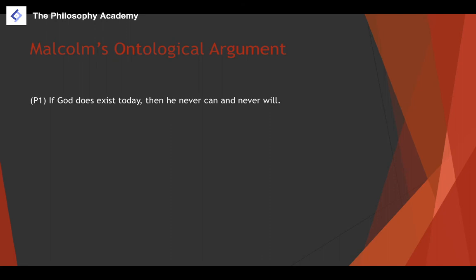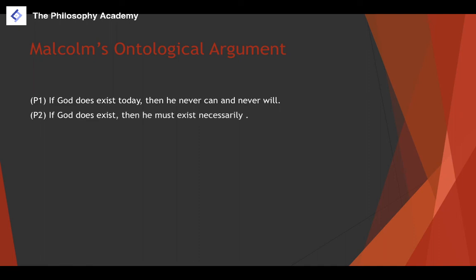Malcolm's argument: Premise one — if God does not exist today, then he never has and never will exist. A key characteristic of God's existence is that if he exists, he must exist forever. Premise two — if God exists, he must exist necessarily. We could argue God might be contingent, but that defeats the purpose of traditional thinking about God, so we generally accept this premise as true.